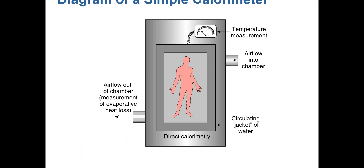We don't have a calorimeter in Lowenstein, but it's a large device that determines total heat production based on airflow. Air flows into the chamber and its temperature is assessed; air flowing out measures total heat lost. Based on the total heat lost from the chamber, we know the heat being produced by the individual, and from that we can determine their basal metabolic rate — the total calories they are expending at rest within the chamber.